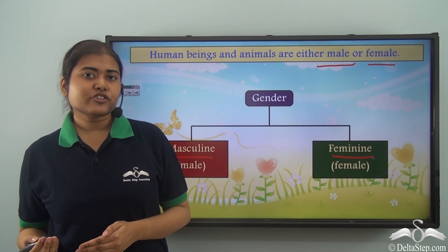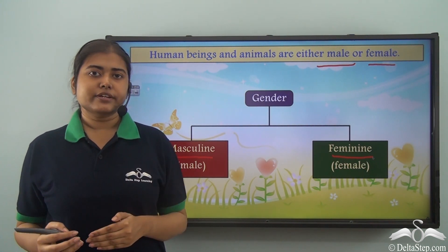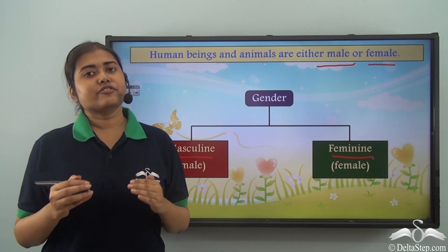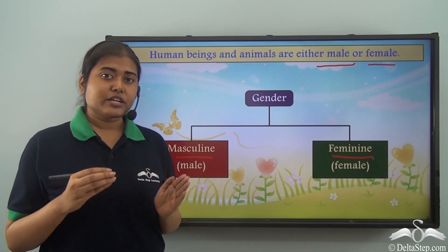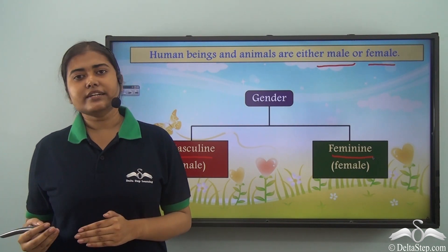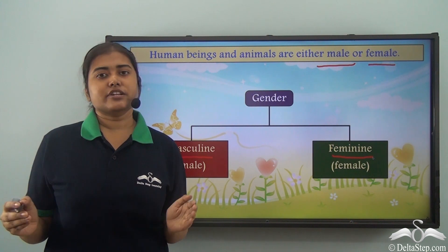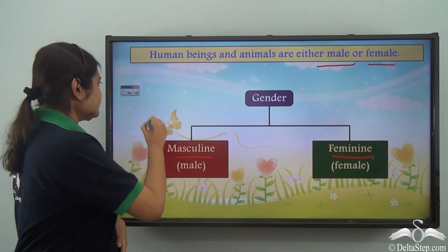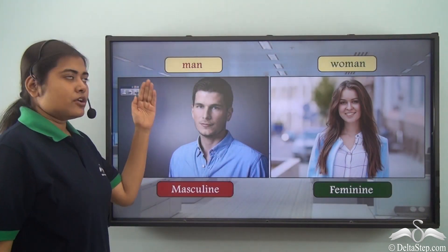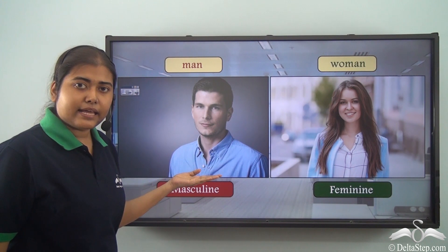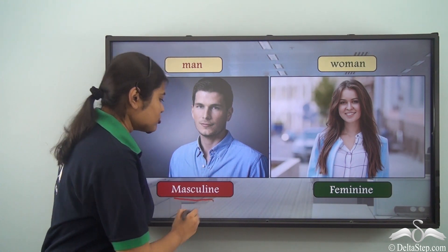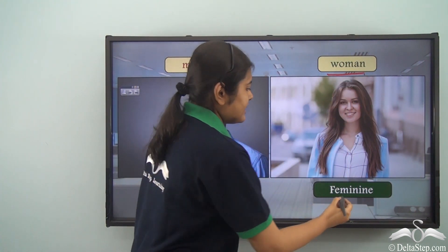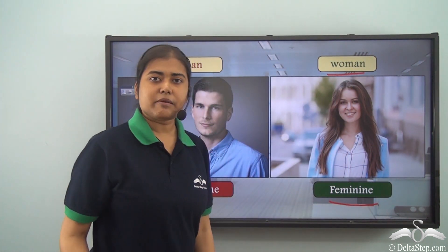What happened in the trial room was that depending on the gender, the males were standing in a separate line whereas the females were standing in a separate line. So it was on the basis of gender that there were two different trial rooms and two different queues. The word 'man' refers to a male, hence it belongs to the masculine gender, whereas 'woman' refers to a female and belongs to the feminine gender.